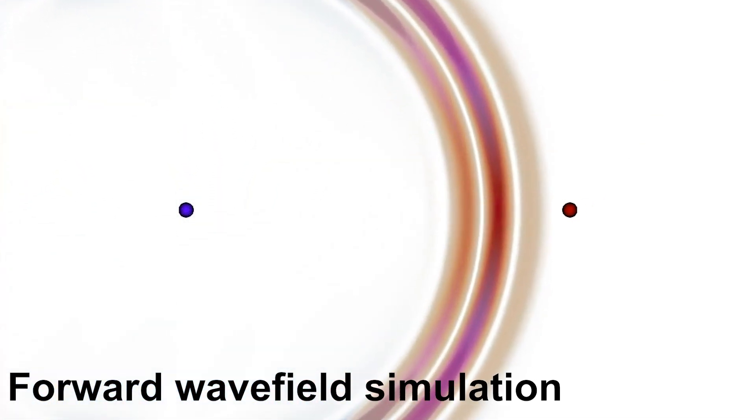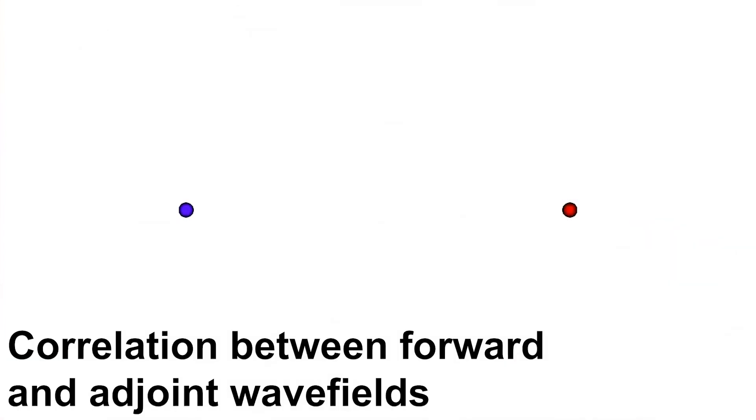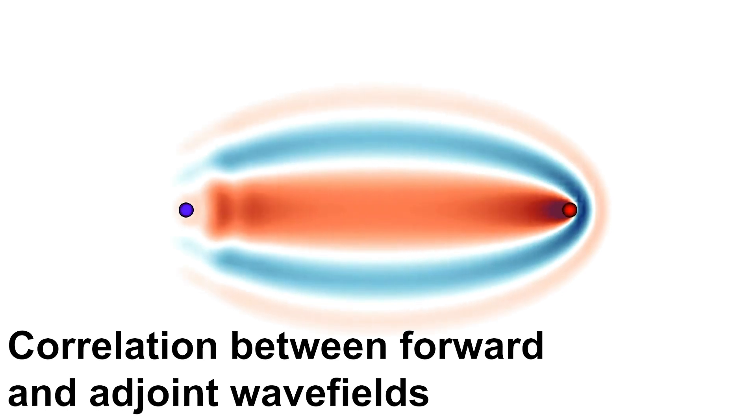Subsequently, it identifies regions where we should change our model to better fit to our observations. This is done through the computation of gradients. Here is an animation of how such a gradient is constructed.